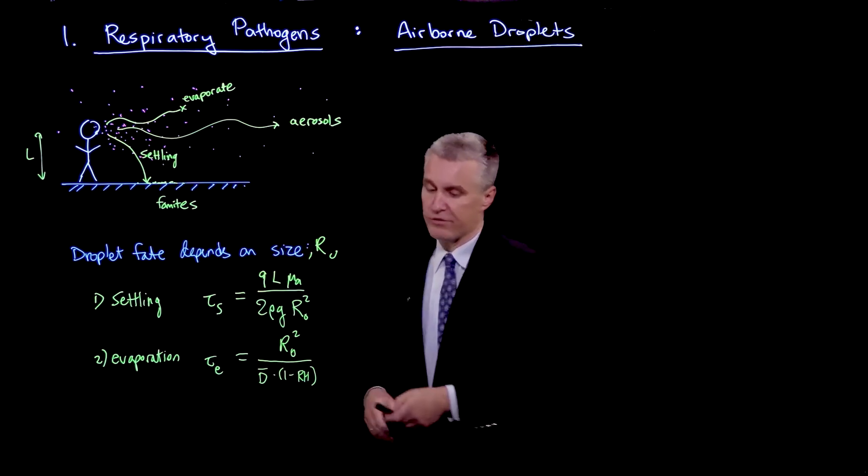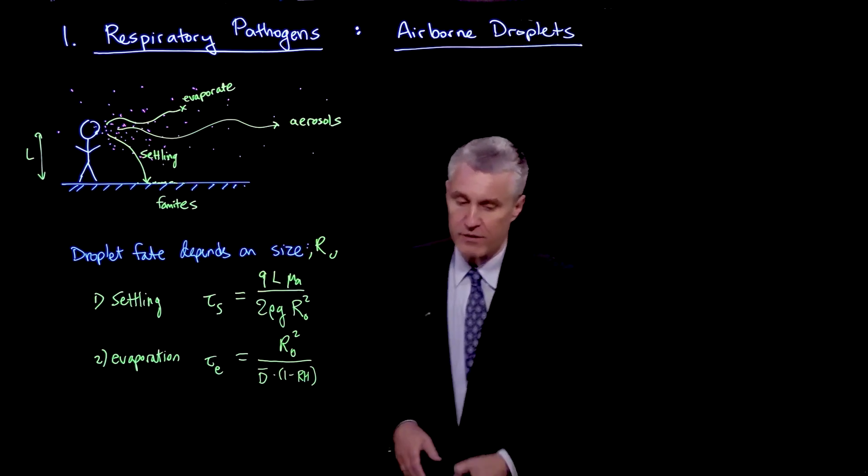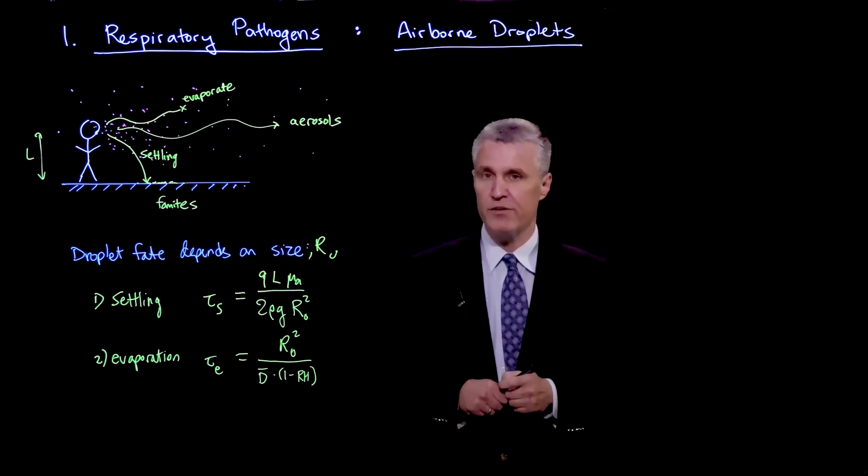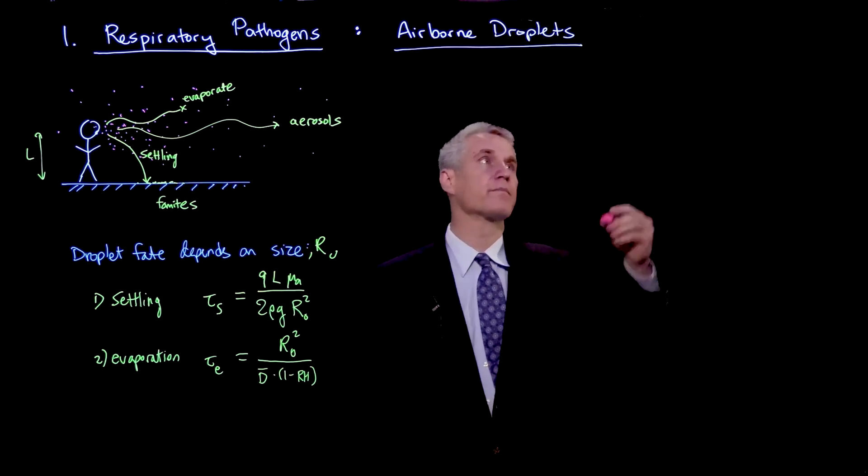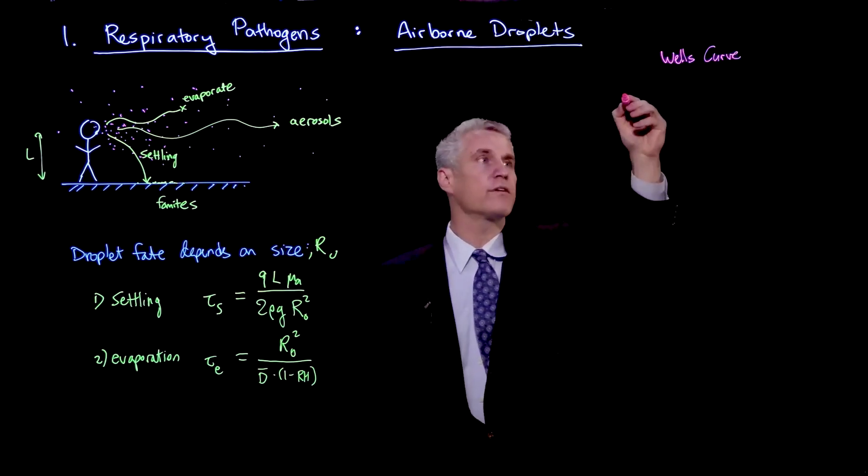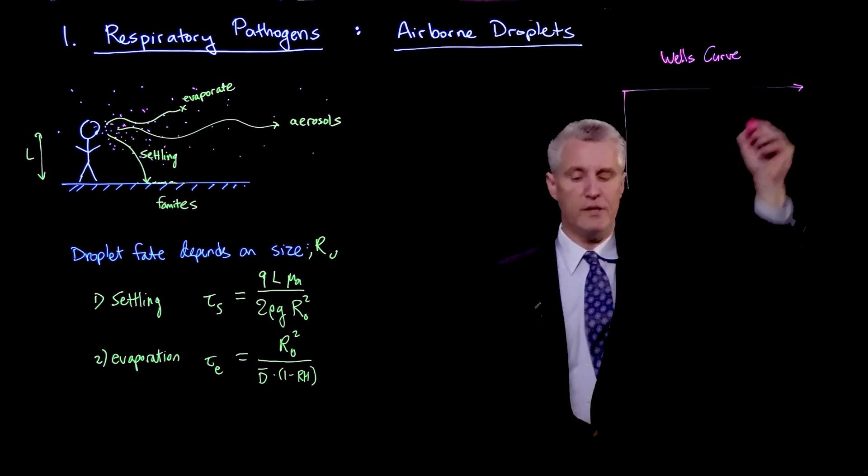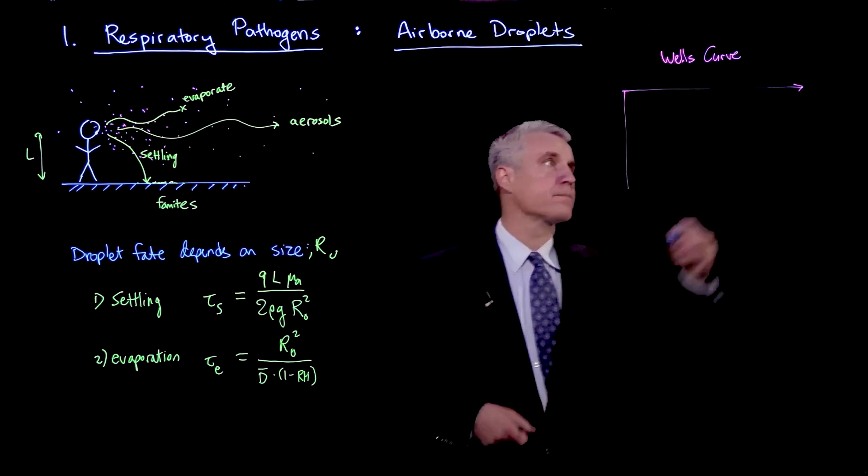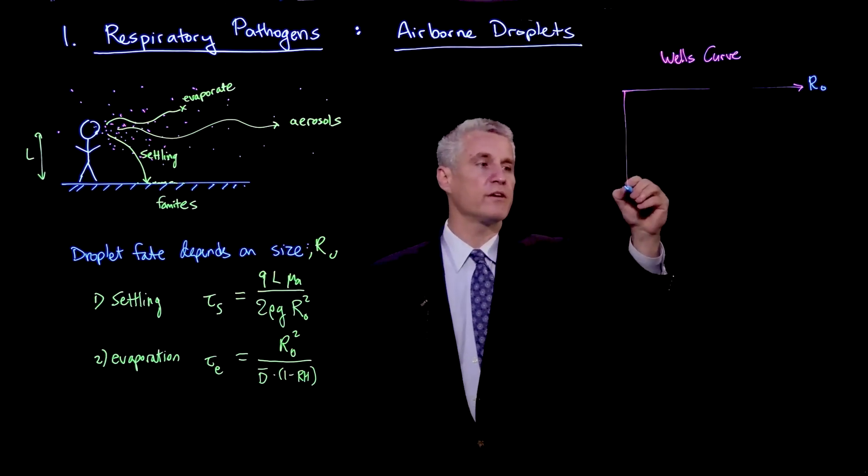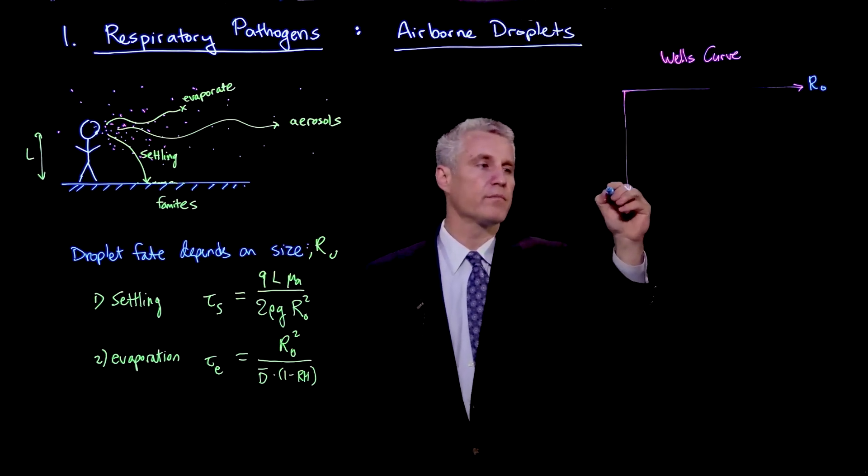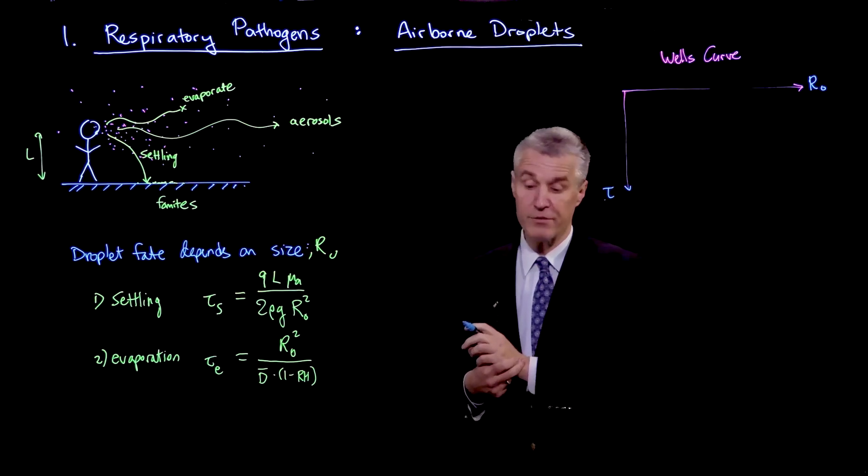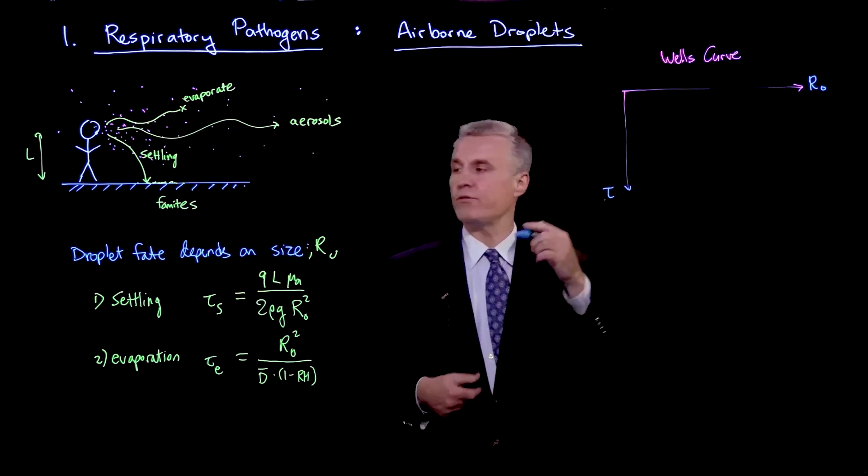So if we plot these two results, we arrive at the so-called Wells curve, which was first formulated by an epidemiologist Wells in 1934. I'll draw that over here. The Wells curve is sketched sort of like this. It says that if we have the drop size R0 on one axis, and on the other axis we have the time that the droplet has left the mouth, then you have basically two expressions here.